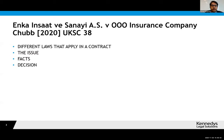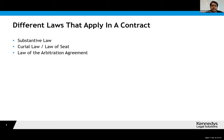What I'll be covering quite quickly before we go into the commercial discussion will be these issues on screen: the different laws that apply to a contract, the issue in this case that was to be determined, the facts of the case, and then the discussion of the actual decision of the Supreme Court. This case concerns how you decide what the applicable law of an arbitration agreement is. Before we get to that, I should briefly explain what sorts of laws apply in contracts.